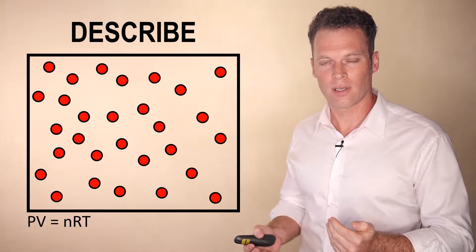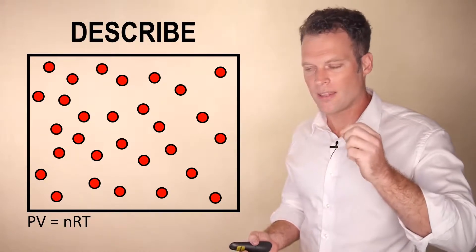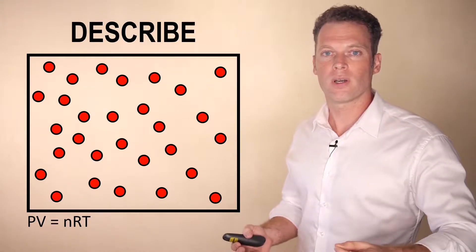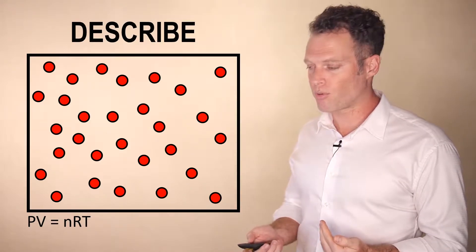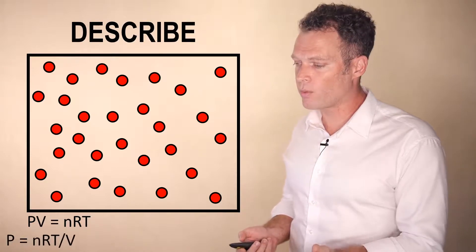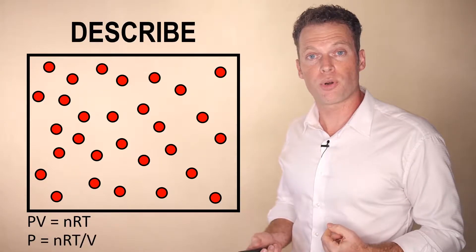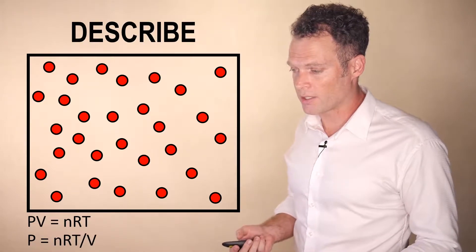And you can, from this equation, estimate the pressure or the volume or the temperature based on knowing the other parameters. And so we know that the volume increased, and we can rearrange the equation to predict how the pressure changed.